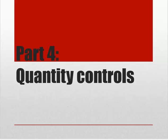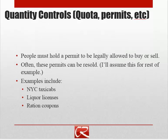Let me talk about some stuff that isn't covered in every introductory economics course — the idea of quantity controls. Instead of intervening to change the market price, the government might intervene to change the market quantity. Just like we had two different versions of price controls — price ceilings and price floors — we have two different versions of quantity controls: controls on buying and controls on selling, and those are actually going to be fairly different.